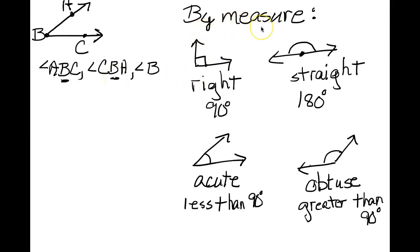We also identify angles by measure, and a right angle is designated only when you have this little corner drawn here at the intersection. A straight angle is the measure of a straight line, so that's 180 degrees. An acute angle is less than 90, whereas an obtuse angle is greater than 90.